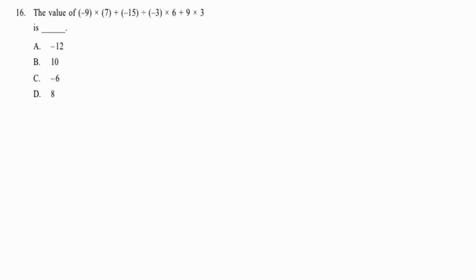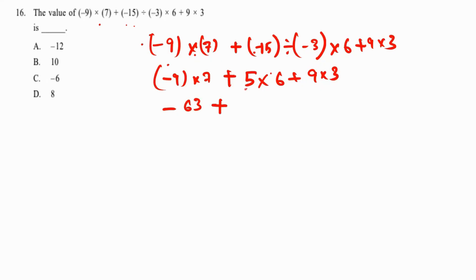Moving to the next section, mathematical reasoning. The first 15 were logical reasoning. This question involves integers. The expression is: minus 9 multiplied by 7 plus minus 15 divided by minus 3 multiplied by 6 plus 9 into 3. Division first: minus 15 divided by minus 3 equals 5. Then multiplication: minus 63, plus 30, plus 27. Addition gives 57. So minus 63 plus 57 equals minus 6. Option C is the answer.